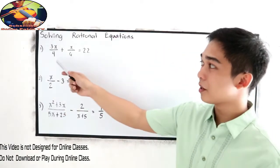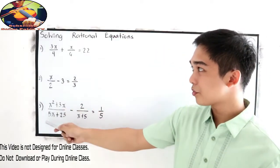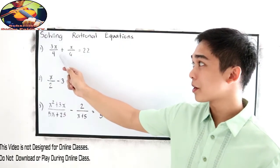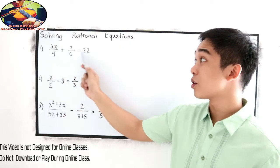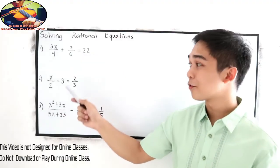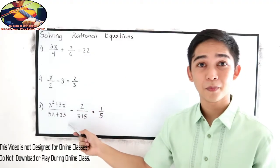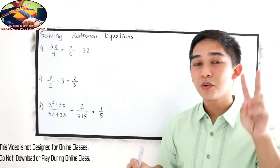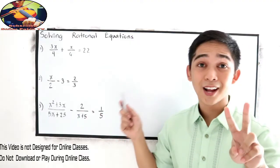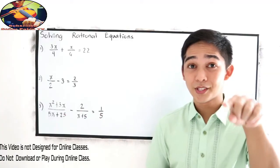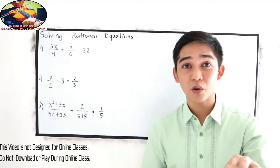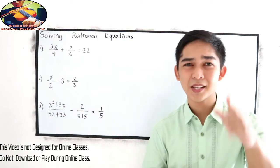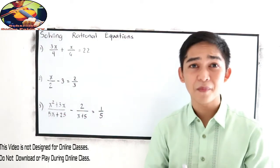In this video we're about to solve number one, two, and three. For number one: three x over four plus x over six is equal to twenty-two. For number two and three, I will give you two methods in solving rational equations, so stay tuned. For those who haven't subscribed to our channel, please subscribe.